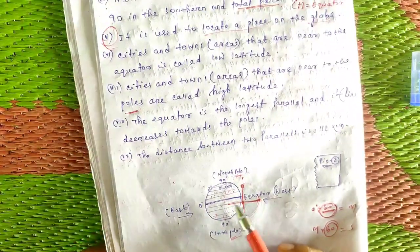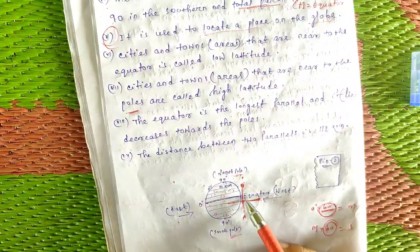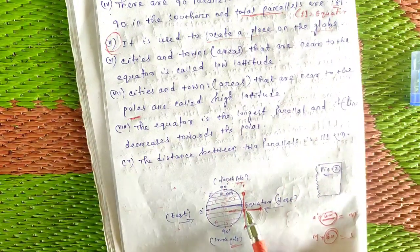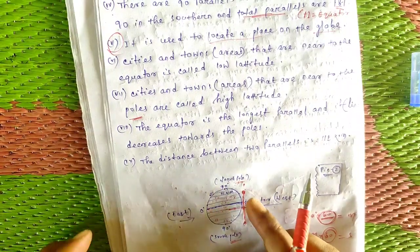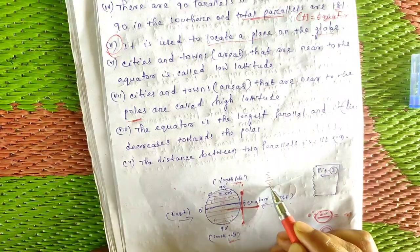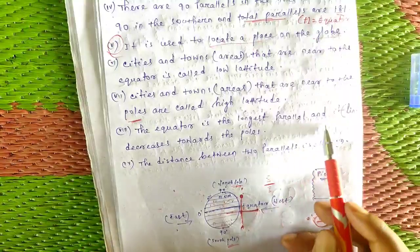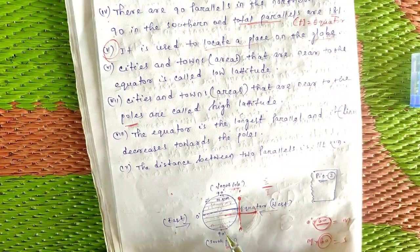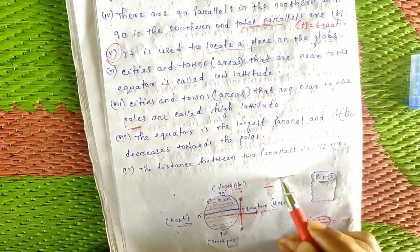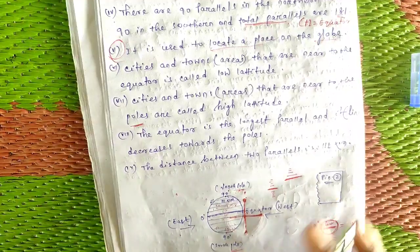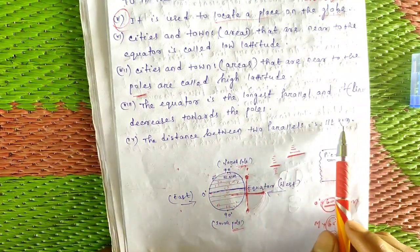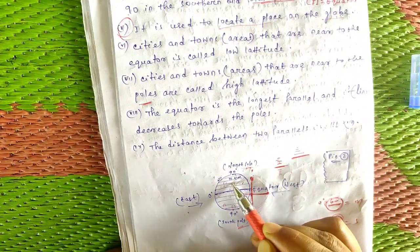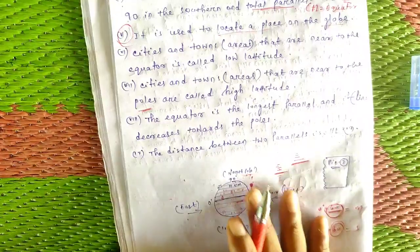The equator is the longest parallel, and the length of the parallels decreases towards the poles. The distance between two parallels is 111 kilometers. I hope latitude is clear.